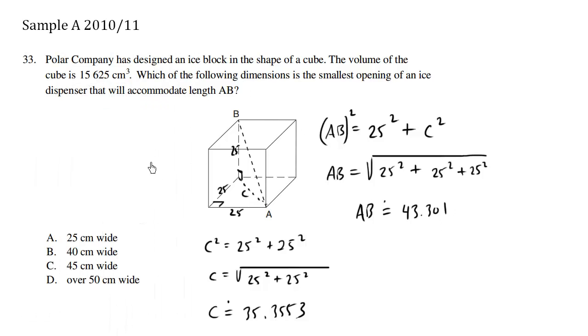So in terms of the choices I have, we know that choice B is too small because 43 will not fit into 40. But choice C is correct because 45 centimeters is long enough to accommodate this length AB.